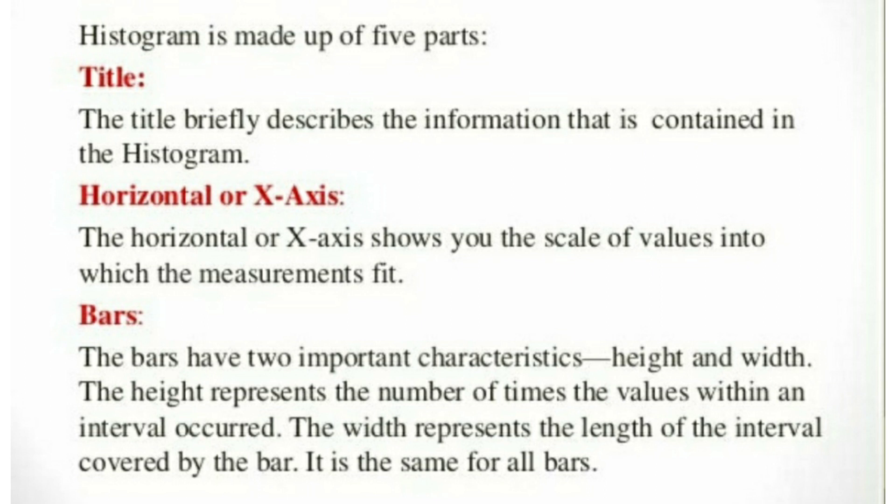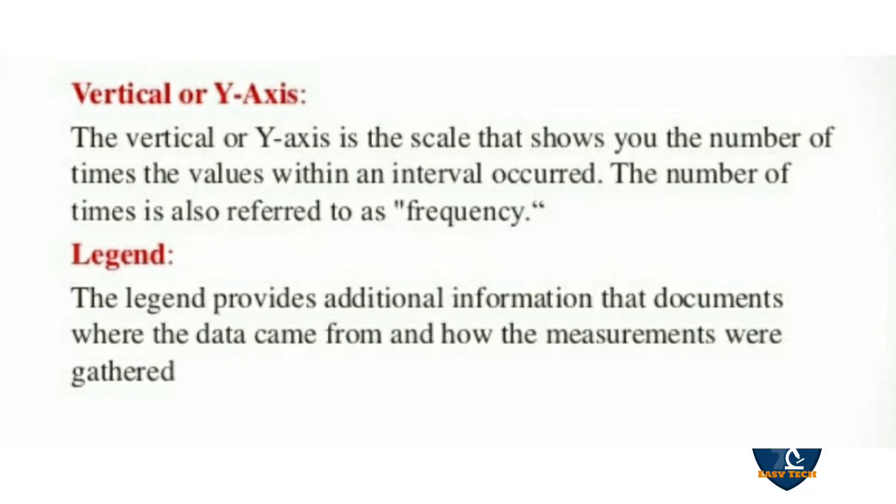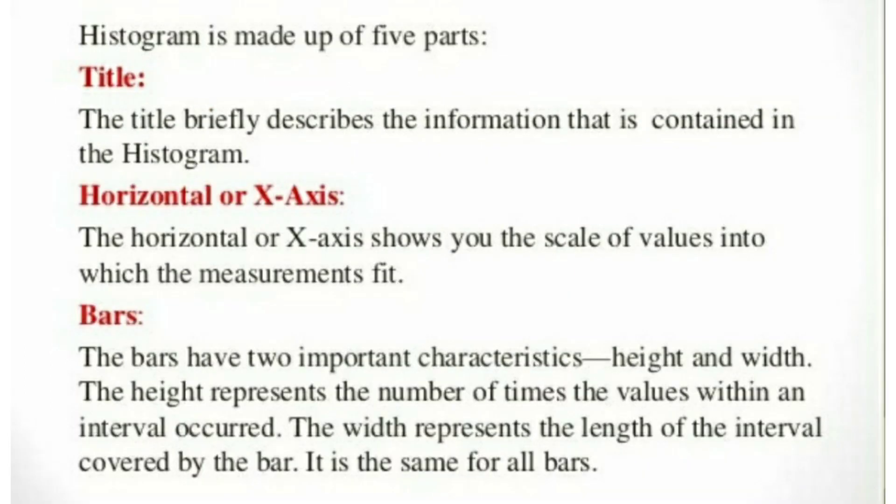What are the parts of a histogram? Histogram is made up of five parts. That is title, horizontal or X axis, bars, vertical or Y axis and legend. What is title? For any histogram, you have to give a title or heading of the histogram. Next, horizontal or X axis. Here in horizontal or X axis, you will be mentioning the characteristics of variables. The horizontal or X axis shows you the scale of values into which the measurement will be fitting. Next is bars.